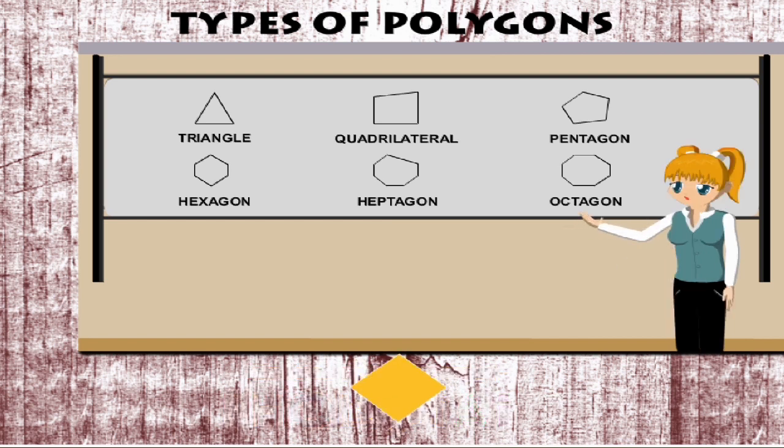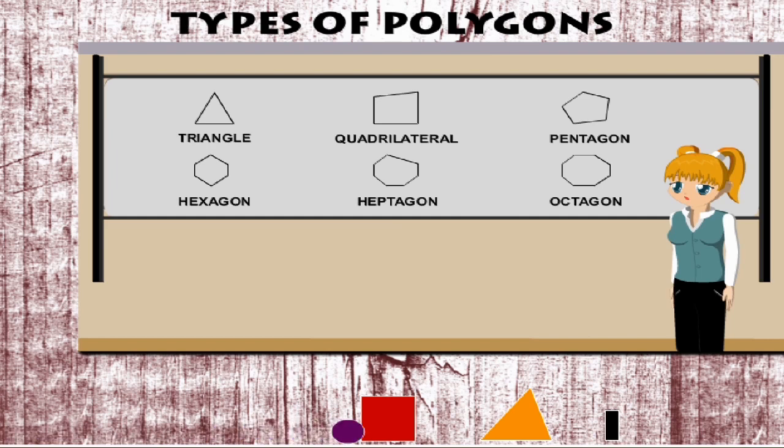Poly means many and gons roughly means sides. So figures with 3 or more sides are called polygons. Thank you ma'am.